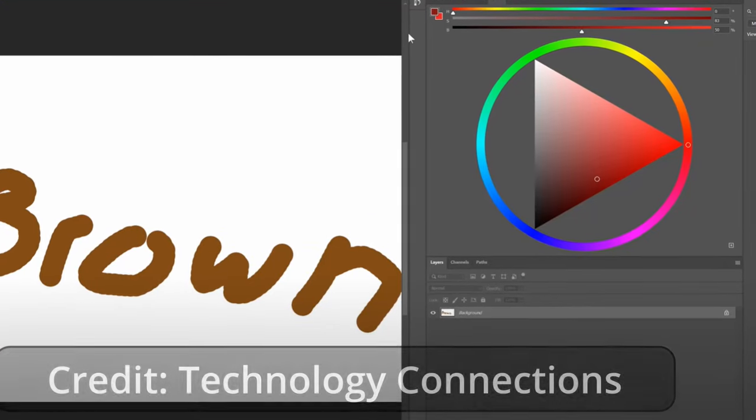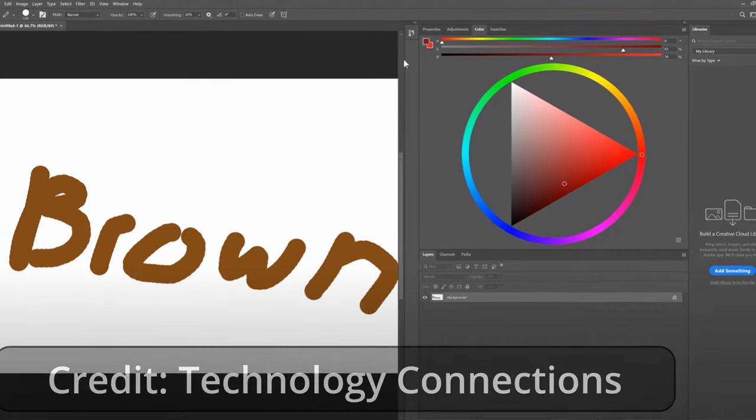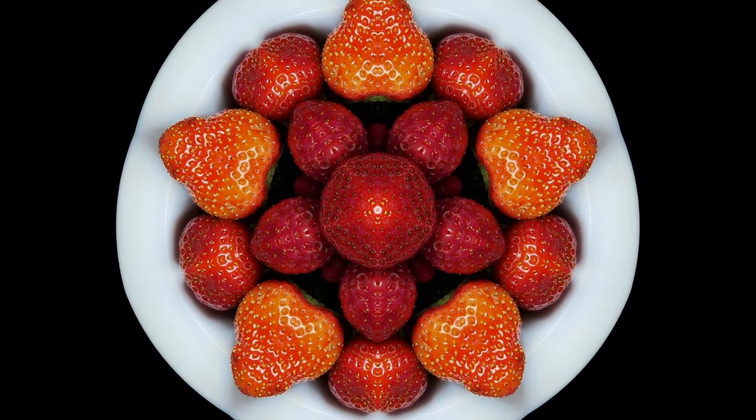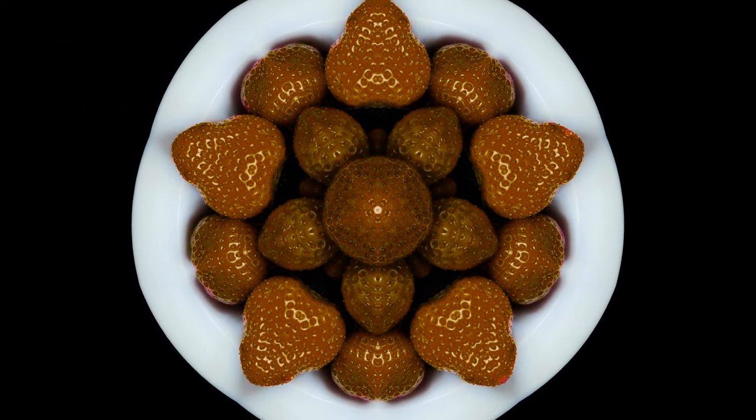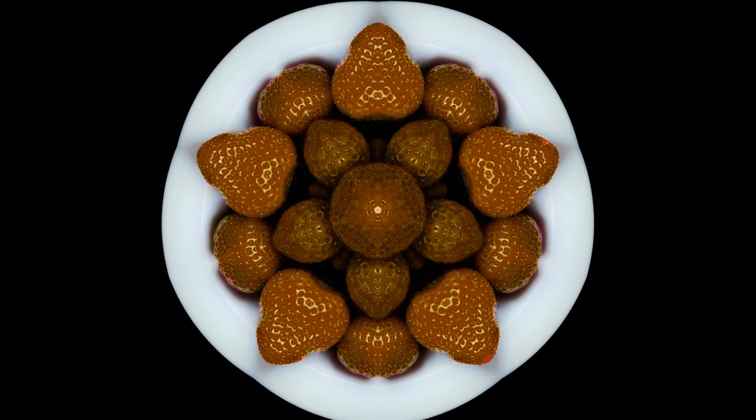A few years back, Technology Connections did a video about how brown is just red. And you know what? He's kind of right. You should check it out. It's a great video, but it's not just your brain mixing the input from the two color channels and the brightness channels. Whether you see brown depends on context. Your brain looks at the surrounding areas of a scene to interpret things.